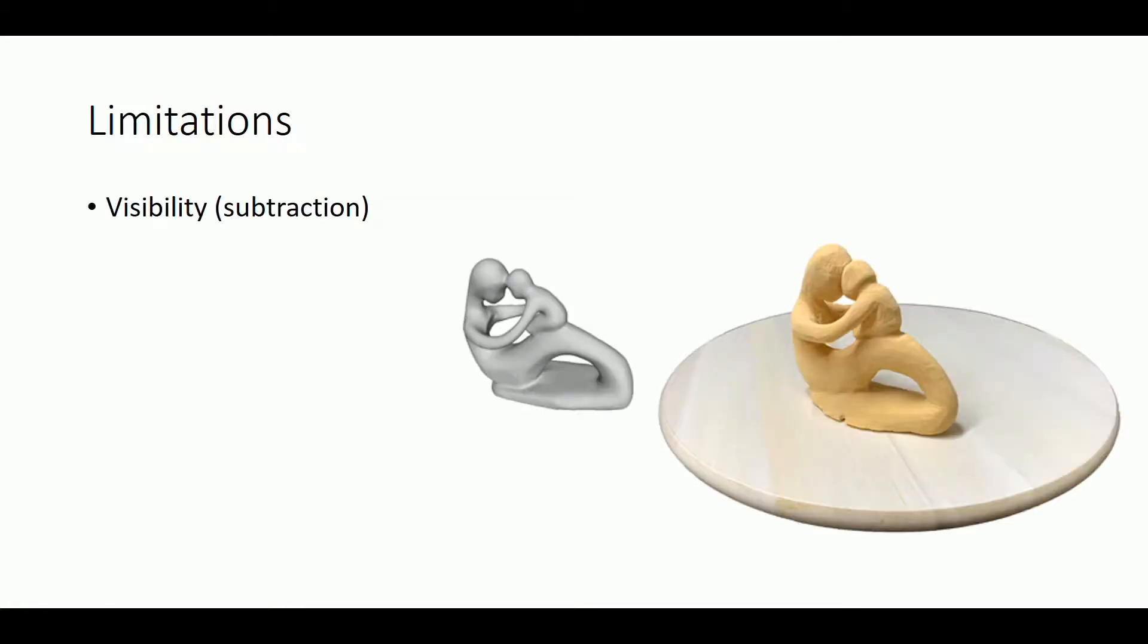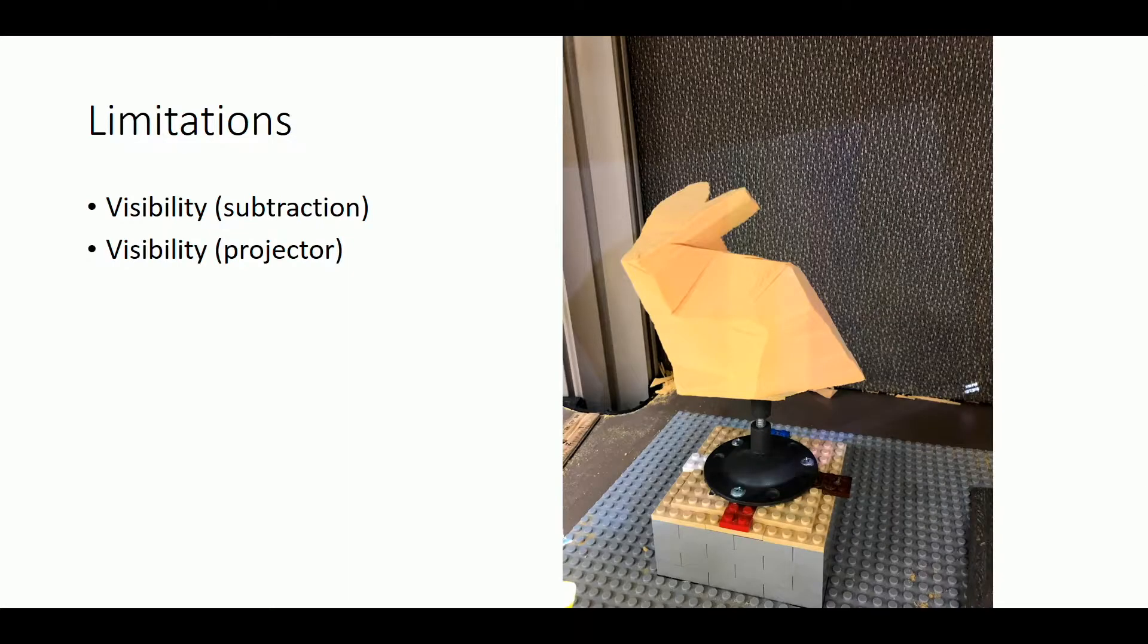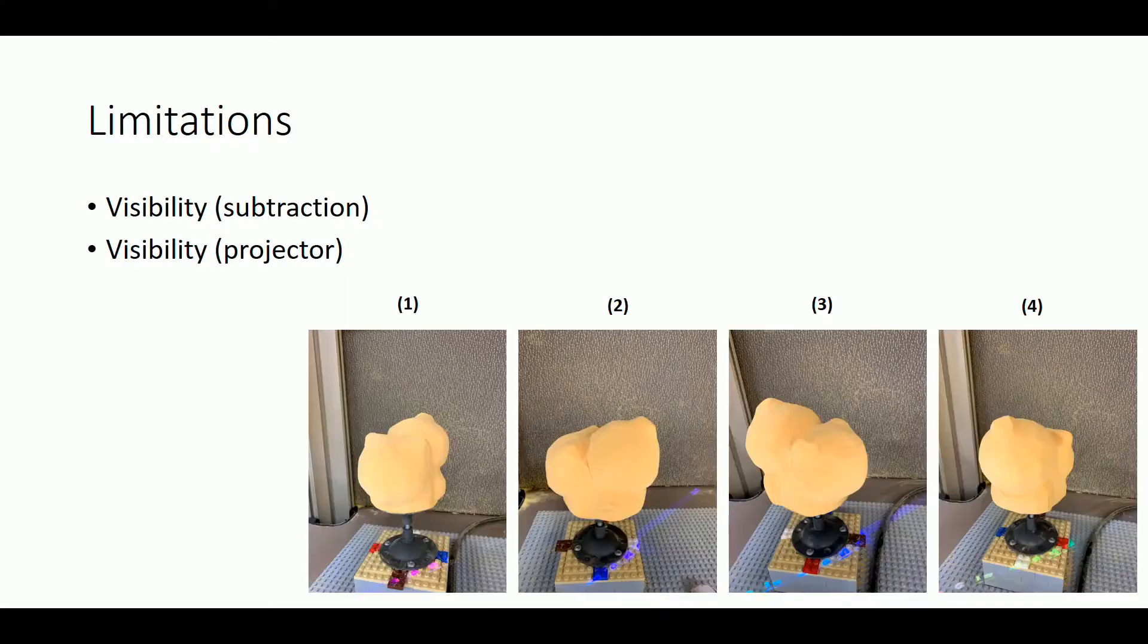For the limitations, there's a visibility limitation. There are some regions that we cannot access with cutting tools. And there's also visibility limitations for the projector because we use a carving stage that could be rotated 90 degrees, so we only have four orientations.